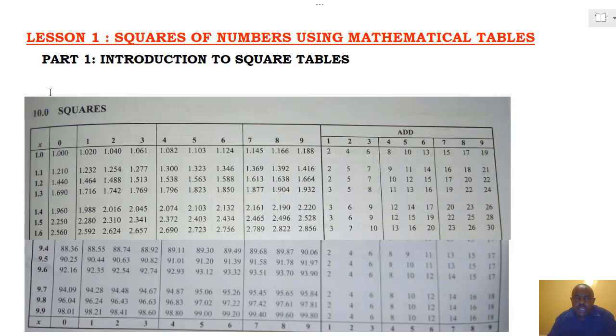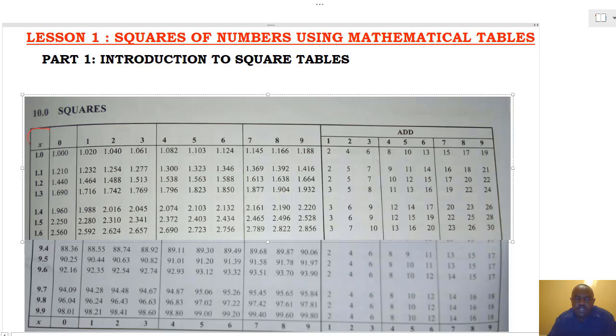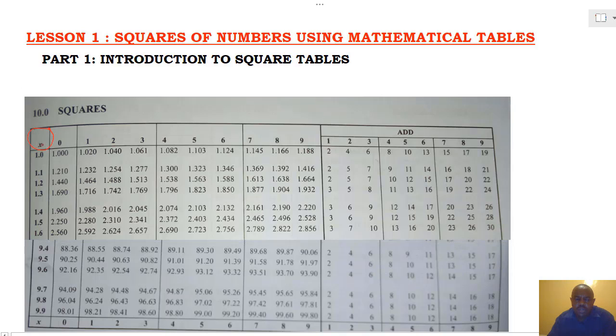The first part is an introduction of how a table of squares looks like. In a table of squares, on the extreme left-hand side, we have x, which represents the numbers to be determined.